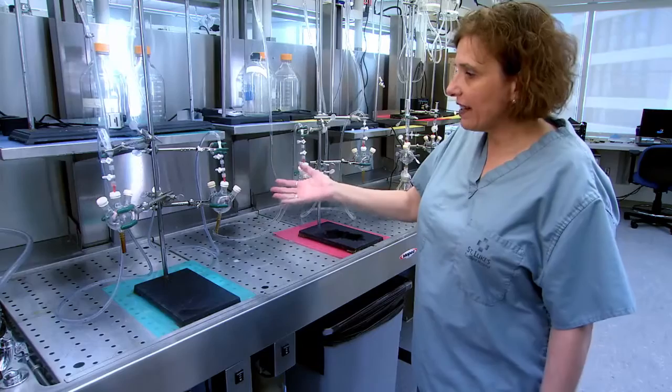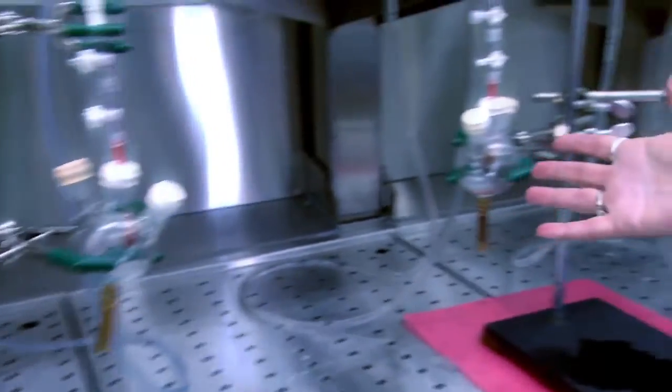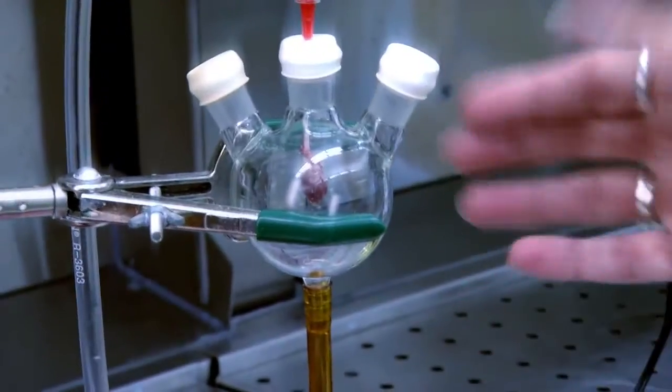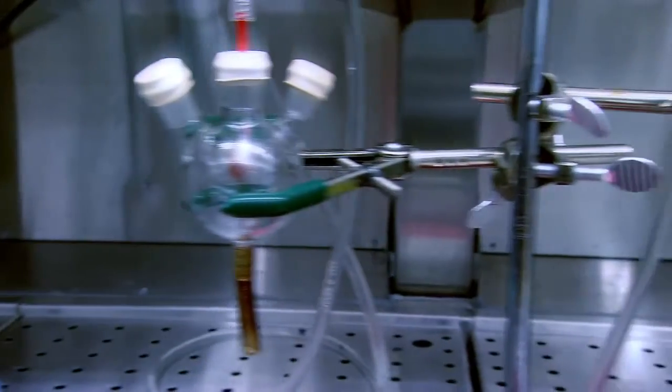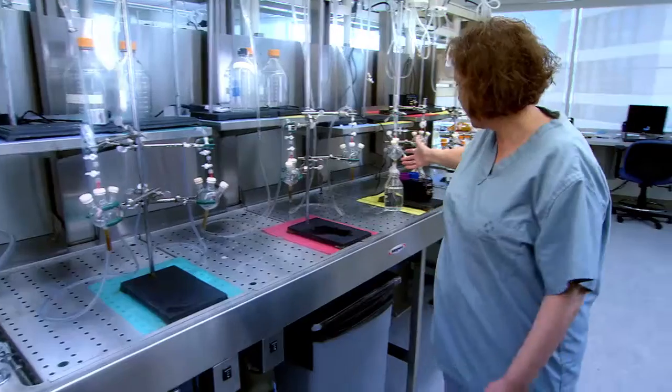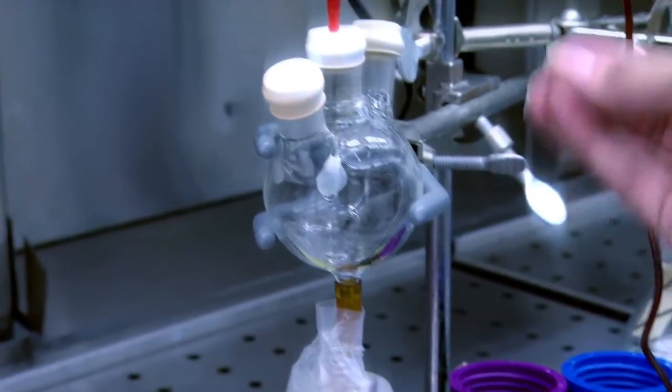What we're looking at here are rat hearts going through the decellularization process. You can see here we have a heart that's still red and muscular. You can see one here that's partway through the process. And then here, you can see a heart that's lost all of its muscle.